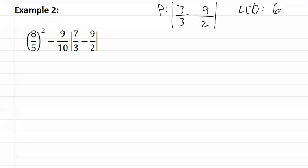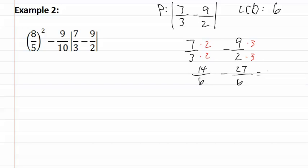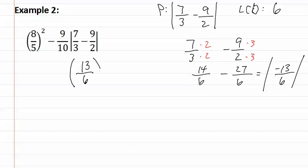We must first find our least common denominator, which is six. Then let's change each of our fractions so that their denominators match and we can subtract. The three needs to be multiplied by two, and the two by three. This gives us fourteen-sixths minus twenty-seven-sixths, which gives us negative thirteen-sixths. This is still inside an absolute value, but when you take the number out of an absolute value it becomes positive — that is what an absolute value does. So we put thirteen-sixths back in the problem, placing it back into parentheses so as not to change the problem.